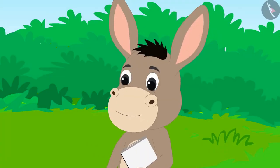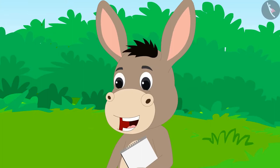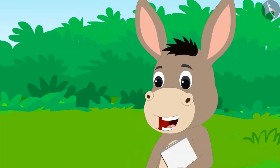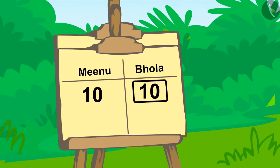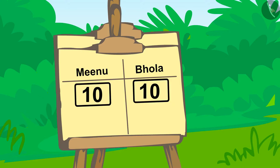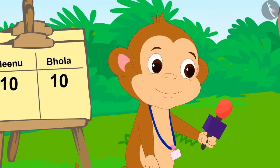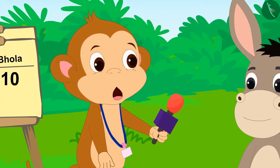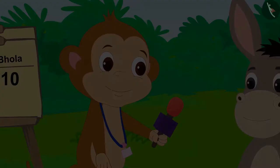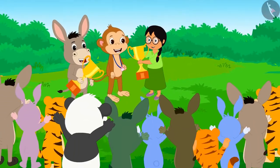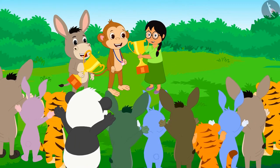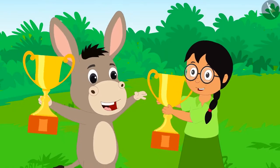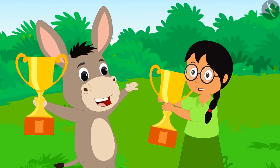This time Bola correctly identified the rule of number pattern and won 10 points. Meenu and Bola have scored equal points. Babban declared both Bola and Meenu the winner of the competition and gave them the winning trophy. Everyone in the audience is clapping. Bola and Meenu are happily dancing.